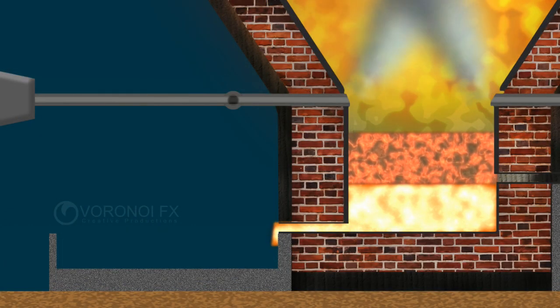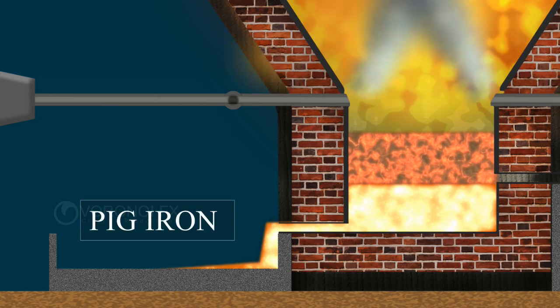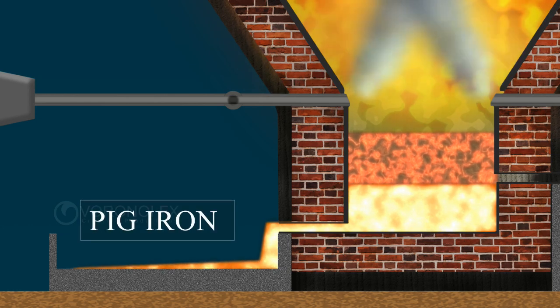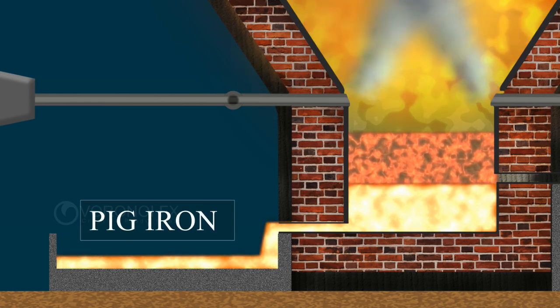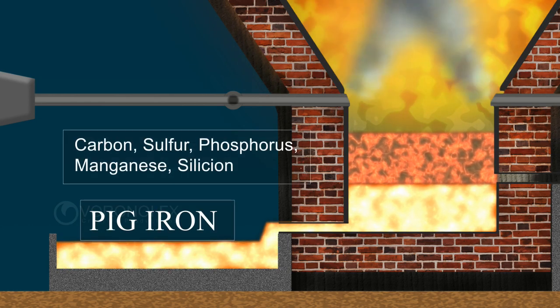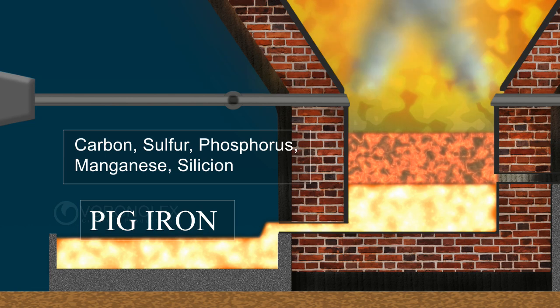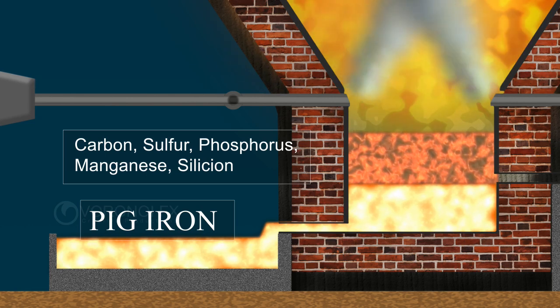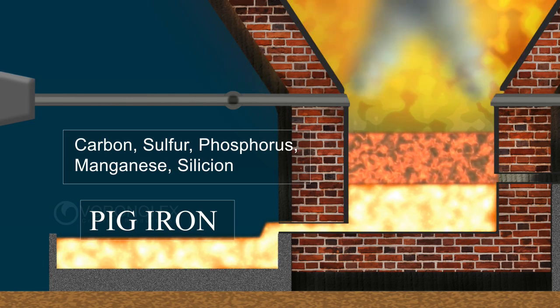The iron obtained directly from the blast furnace is called pig iron. It contains carbon, sulfur, phosphorus, manganese, silicon, etc. in very small quantities.